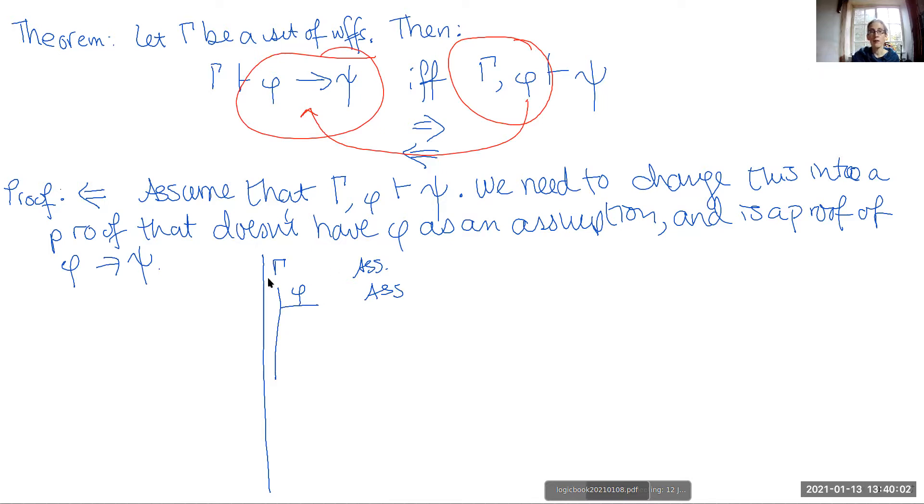Now if we know that from the assumption of all of the formulas in gamma and the assumption of phi, let's call that line i, that we can prove psi.